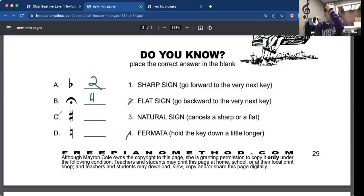C. So C is the opposite of the flat, which would be sharp. We'll write a number one in there. And then letter D is something that we haven't come across yet, but that is the natural sign.